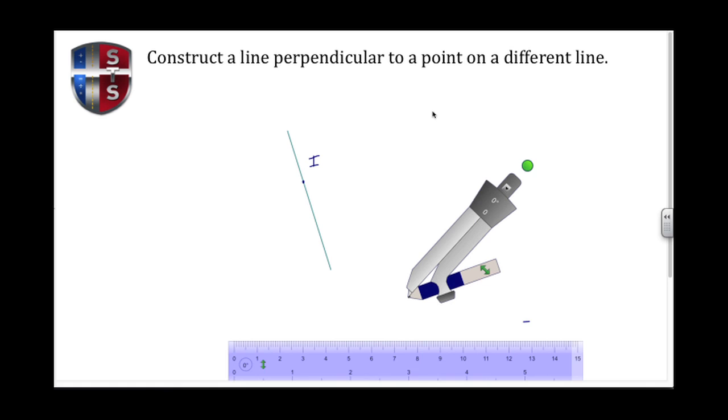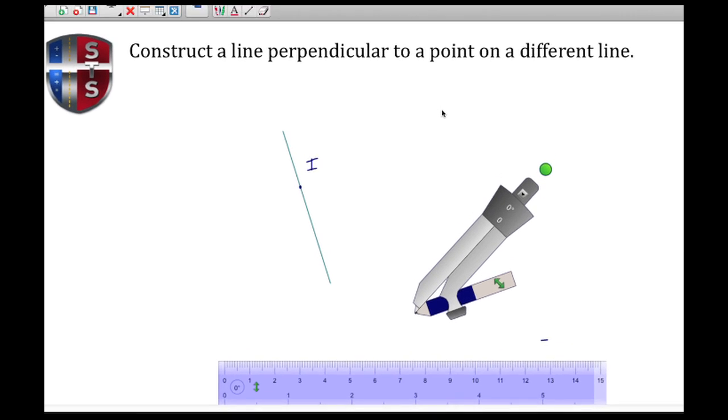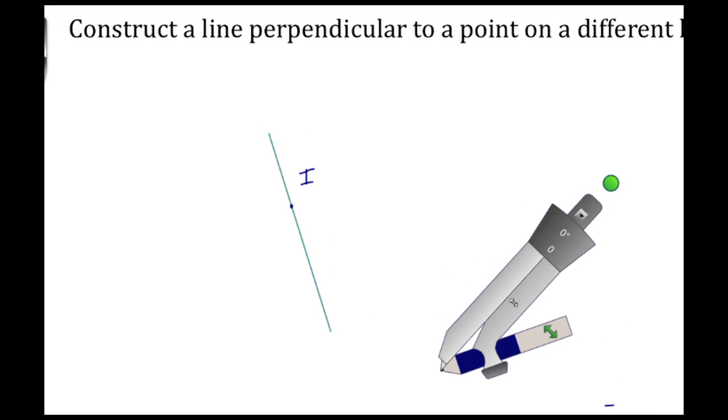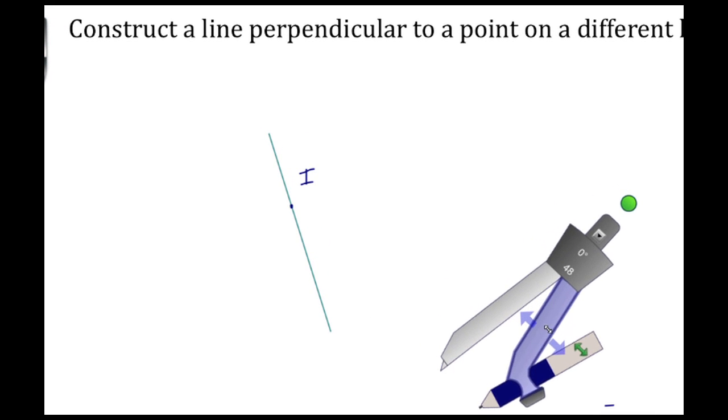Welcome back to Spell Tutorial Services. In today's video we're going to construct a line that's going to be perpendicular to a point on a different line. We begin by taking our compass tool and setting it to an arbitrary radius.